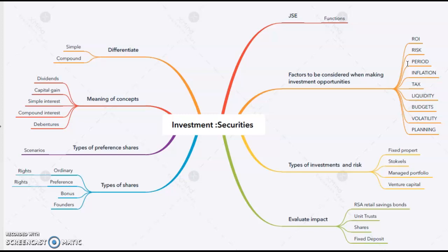Following that, you then need to look at what types of investments are available to you and what risk they carry. You need to explain each type and then speak about the risk. We're looking at things like fixed property, stock price, managed portfolios, and venture capital.